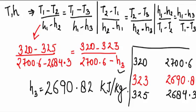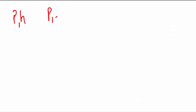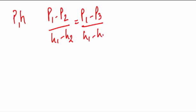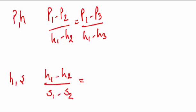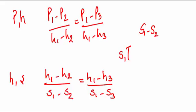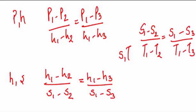If P and h are given, then we can write P1 minus P2 upon h1 minus h2 equal to P1 minus P3 upon h1 minus h3. In similar fashion, if h and s are given, then h1 minus h2 upon s1 minus s2 is equal to h1 minus h3 upon s1 minus s3. Similarly, if s and T are given, then s1 minus s2 upon T1 minus T2 must be equal to s1 minus s3 upon T1 minus T3. So remember the pattern, and in this pattern you can interpolate between any two values.